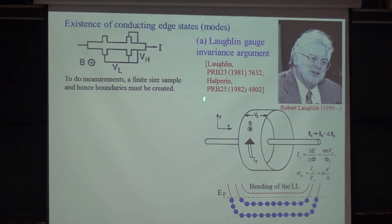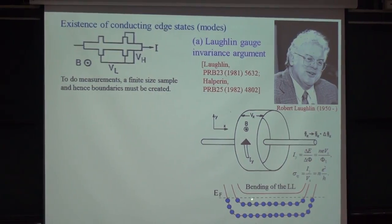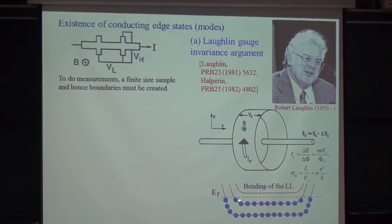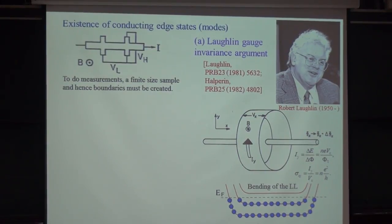This argument was elaborated by Halperin, who more clearly illustrated that because we have Landau levels below the Fermi level, when you create an edge, these Landau levels bend and go through the Fermi level, becoming metallic edge states. This is one way to understand why we have an insulating phase, but it conducts along the transverse direction.